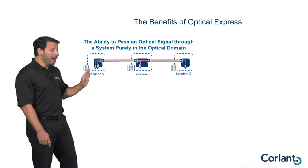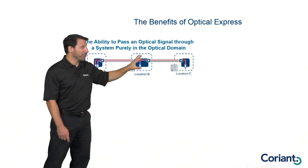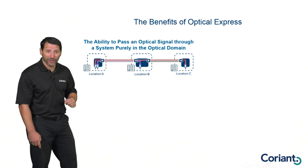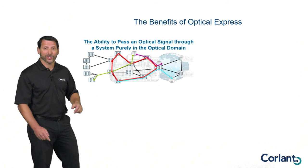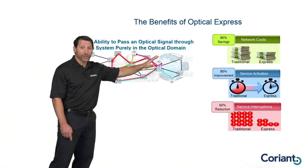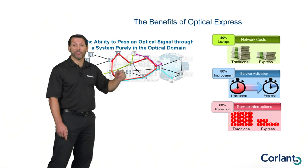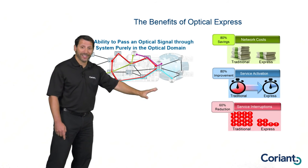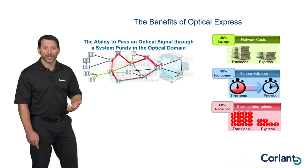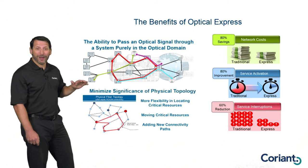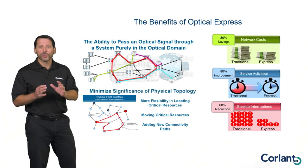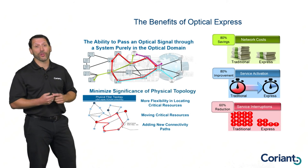To summarize: Optical Express is the ability to optically traverse intermediate locations purely in the optical domain. Its impact and benefits are amplified the bigger the network — the more locations, the more bandwidth. We've seen the benefits from a capital and operational cost perspective, the impact on service activation times enabling much more rapidly turned-up services, and the impact on network reliability both in mesh restoration and in minimizing the amount of time people touch the network. We've also taken a look at the philosophical changes that Optical Express enables — re-architecting and rethinking overall network architecture for much more efficient designs.